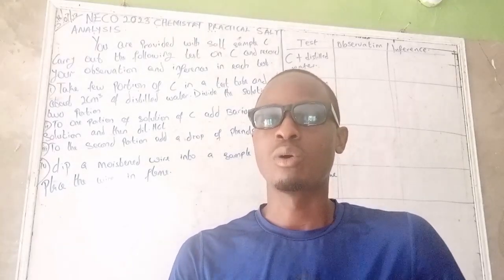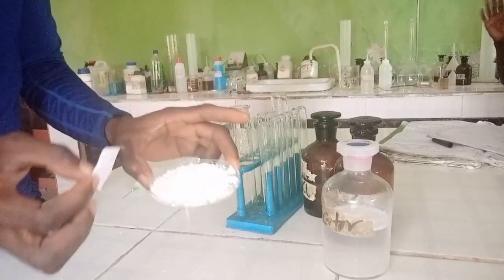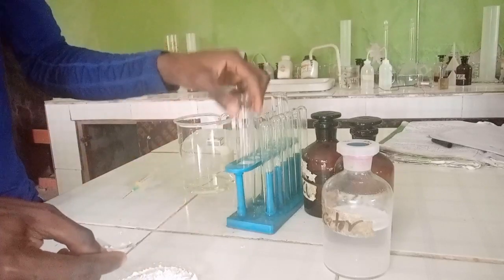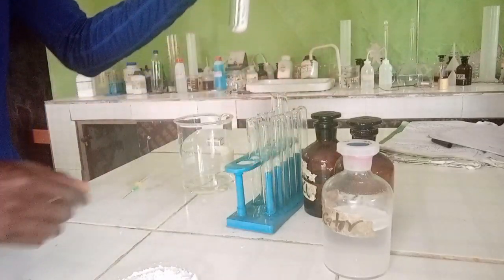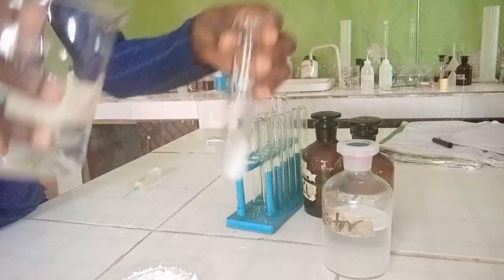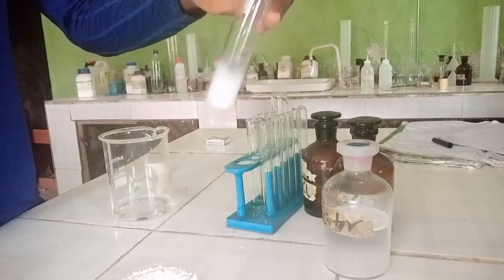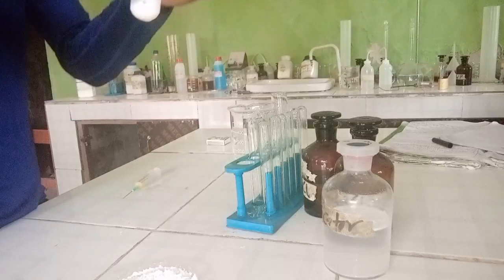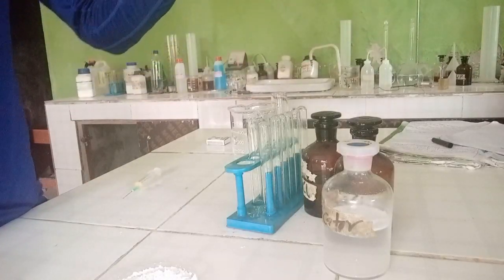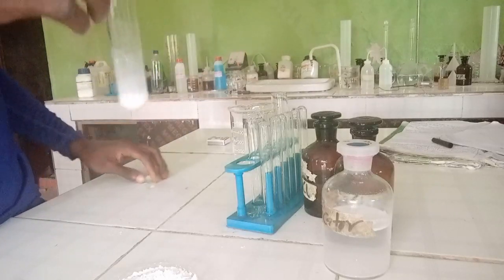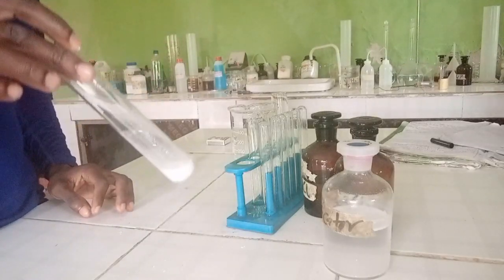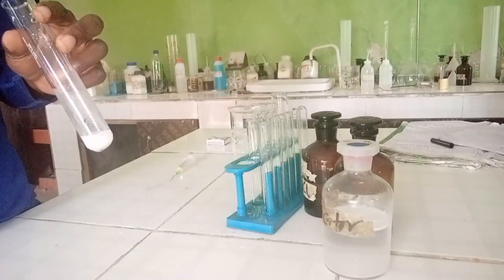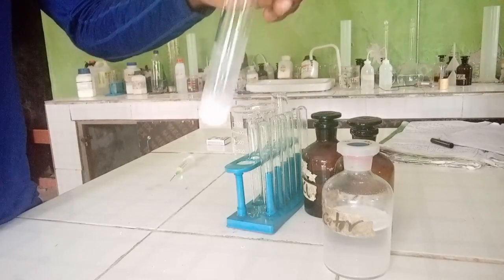So let's carry out the practical so you can see everything and record the observation. This is sample C — let's add this sample into the test tube. I'm going to use a boiling tube here. I've added it and now added about two centimeter cubes of distilled water. The solution turns white and soluble because no particles are found — it turns into a white solution with no particles present.